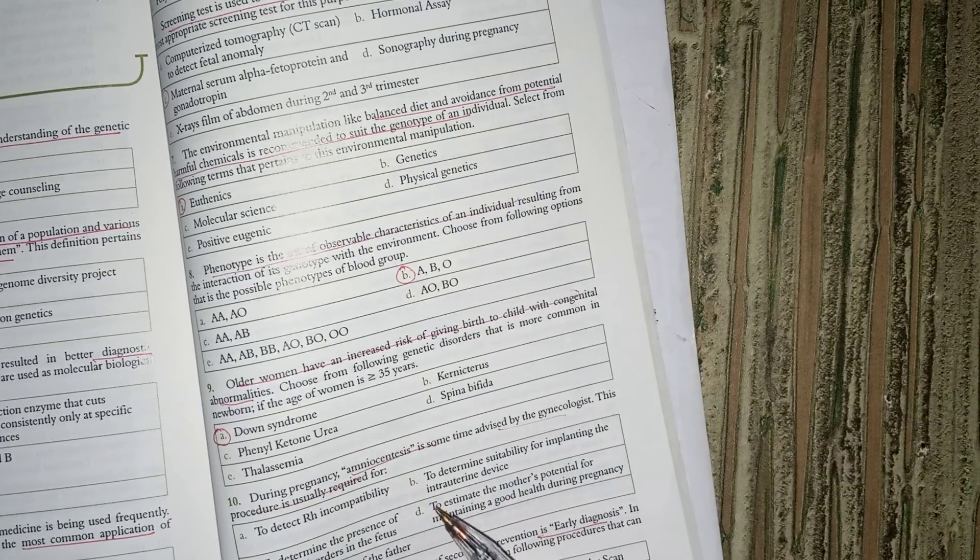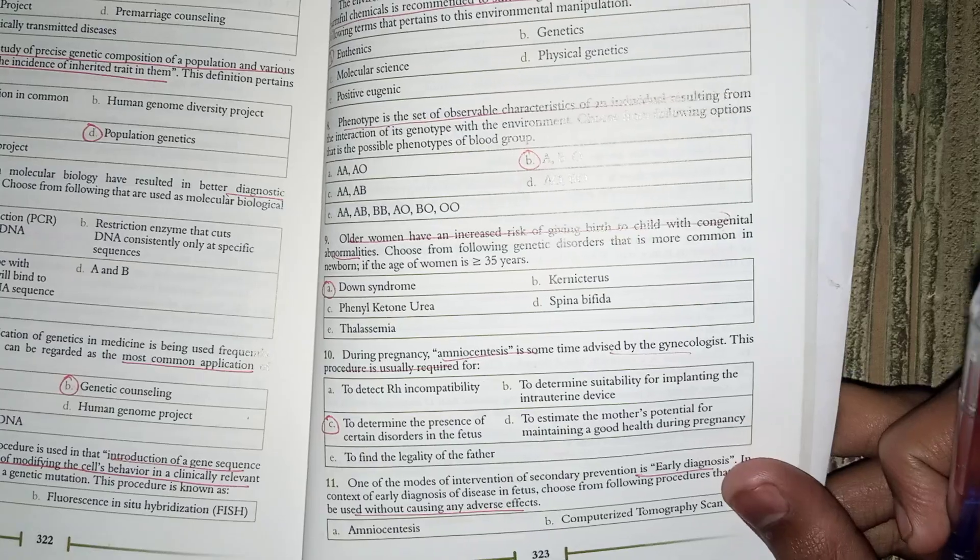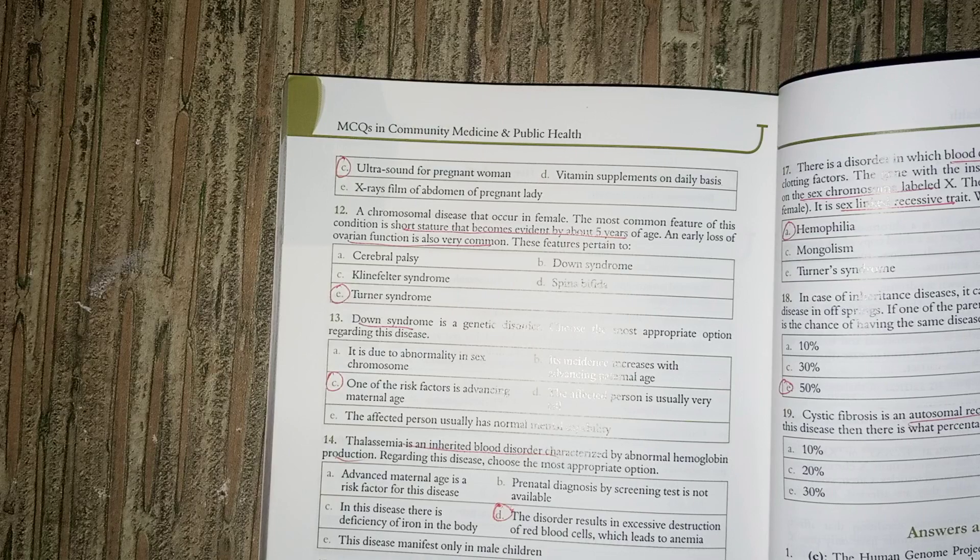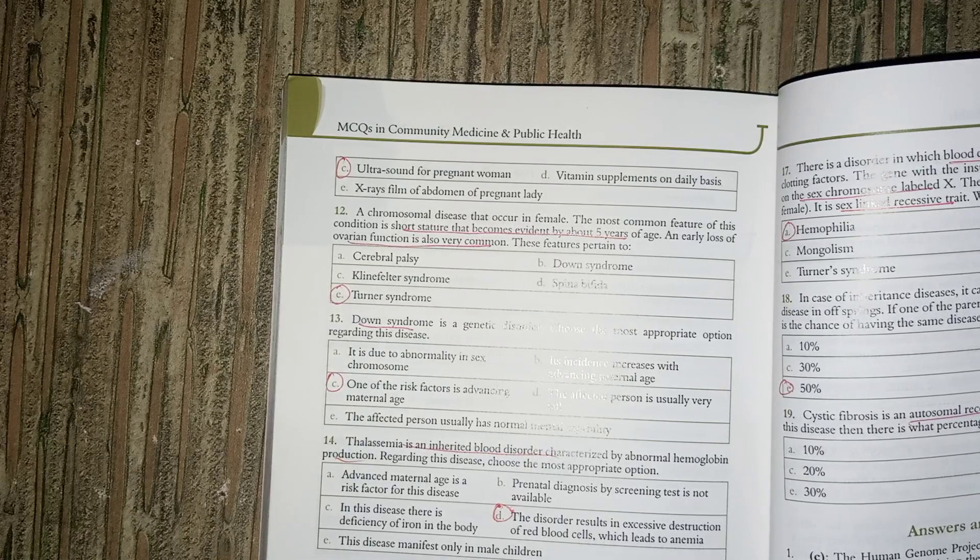Maternal age is a risk factor for Down syndrome. Amniocentesis detects chromosome disorders in the fetus. Early diagnosis using ultrasound is less harmful and non-lethal compared to radiation-based methods like X-ray.